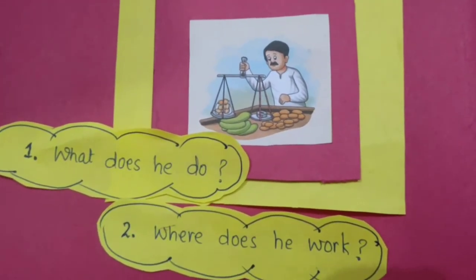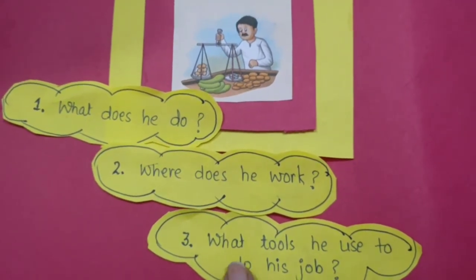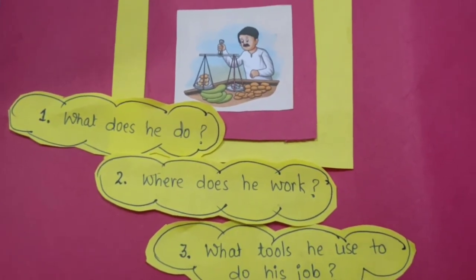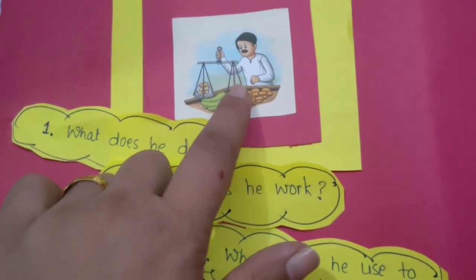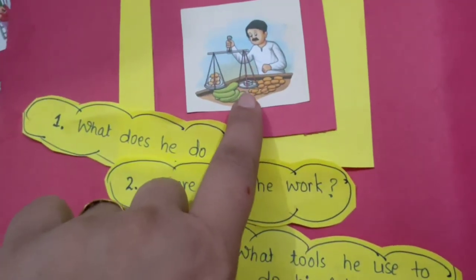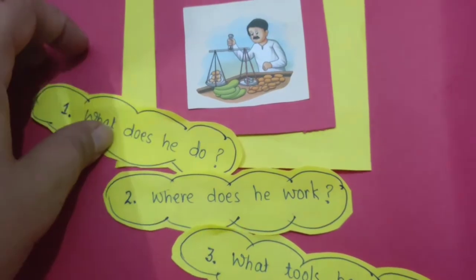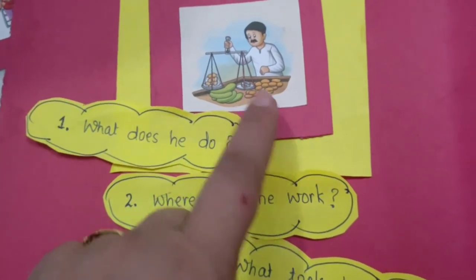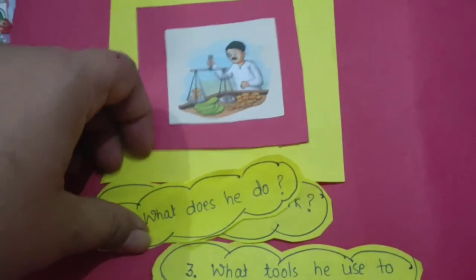Now, if you think that this question is a little tricky, you can think about another question in your mind. What is the other question? That is: what tools does a Green Grocer use to do his job? What tools does he use? He uses — can you see what is this? Do you know the name of his tool? He uses a balance. And do you know what is this which is kept in the balance? It is a weight. So you can write: a Green Grocer uses balance and weight to do his job.